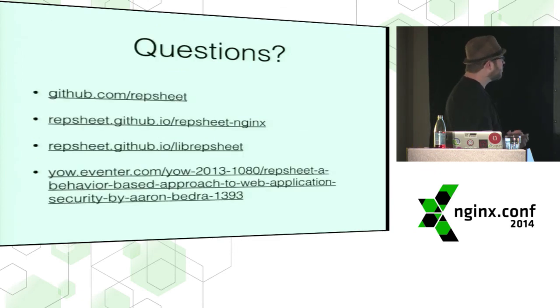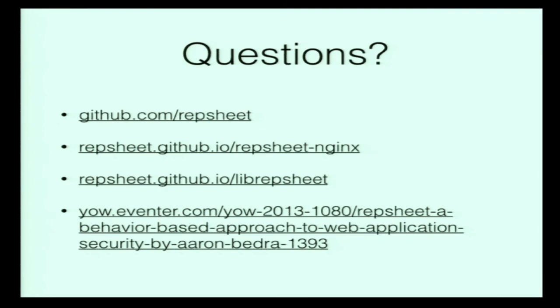A couple of links: the RepSheet project and all libraries are under one organization at github.com/repsheet. Repsheet.github.io has a Gitbook describing how to install Nginx RepSheet and its dependencies. Lib RepSheet, the core library, has a GitHub page with documentation and code coverage. There's also a much more complete version of the thought process — what to look for, how to identify behavior — from a talk in Australia last year about what behavioral analysis really entails as it pertains to the web.